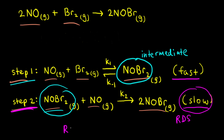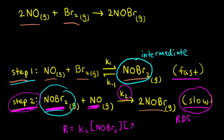So we write the rate of reaction equal to, for step two, the rate constant K2 multiplied by the concentrations of our two reactants: the concentration of NOBr2 and the concentration of NO. Since the coefficients in the balanced equation are both one, we raise those concentrations to the first power — we can do this because this is an elementary reaction.